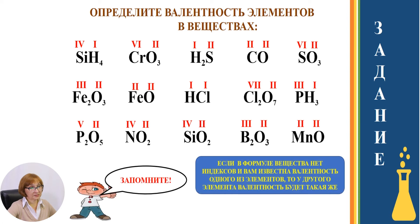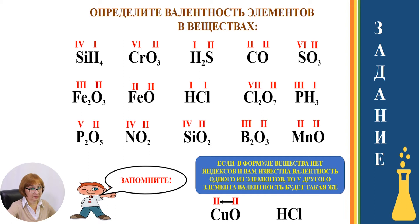Запомните: если в формуле вещества нет индексов и вам известна валентность одного из элементов, то у другого элемента валентность будет такая же. Например, CuO: валентность кислорода равна 2, индексов нет, значит у меди валентность тоже 2. Ещё пример: HCl. Валентность водорода постоянная и равна 1. Индексов в веществе нет, значит у хлора валентность тоже равна 1.